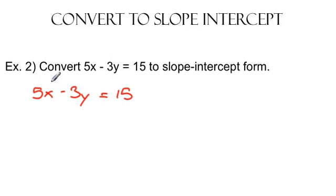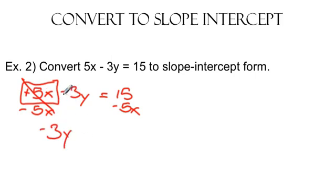So the things that are keeping this y from being by itself, first, we've got this 5x paired up with it, and notice there's nothing in front, so I can assume a plus there. So to get rid of that, I'm going to subtract 5x from both sides. Well, plus 5x minus 5x, those cancel out, and I'm left with negative 3y. Notice that sign has to come with it, equals negative 5x plus 15.